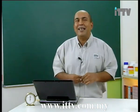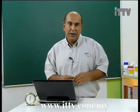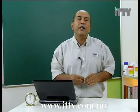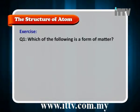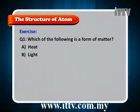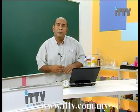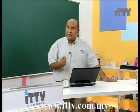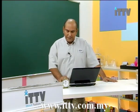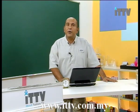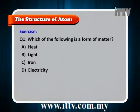Let's try a few questions to recall what we've learned. Question 1: Which of the following is a form of matter? Remember, matter has volume, occupies space, and has mass. Which of these four options has all these properties? The answer is C, iron.